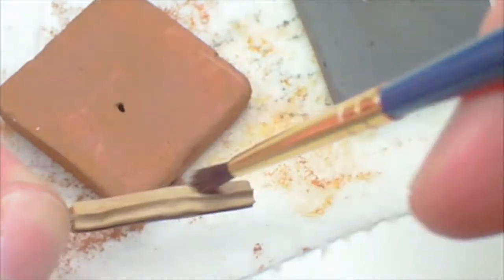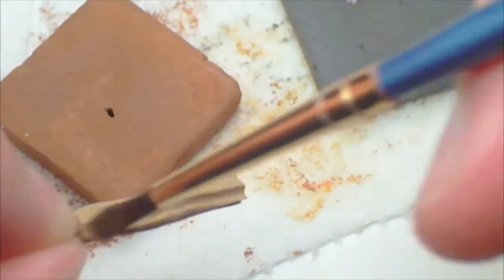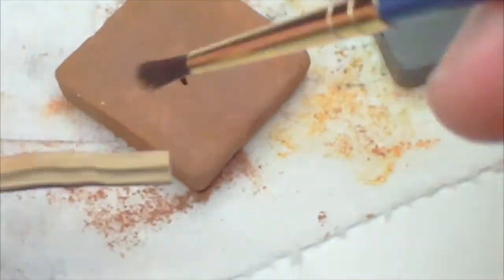To make the churro appear to be cooked, brush on some dark brown chalk with a paintbrush.